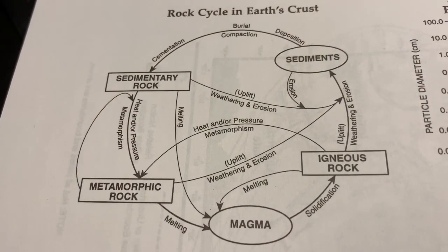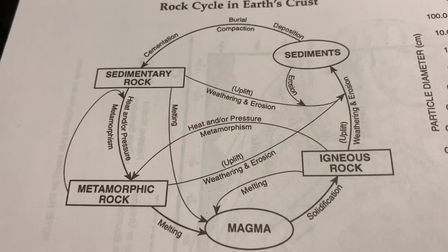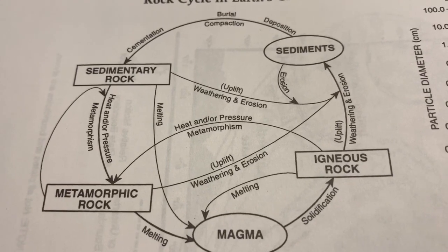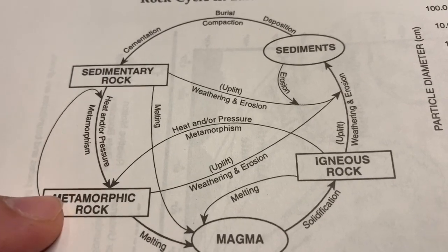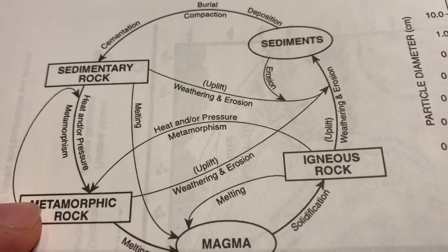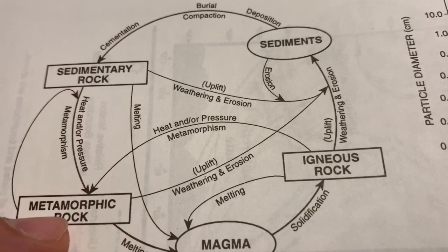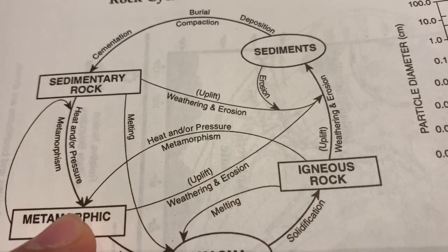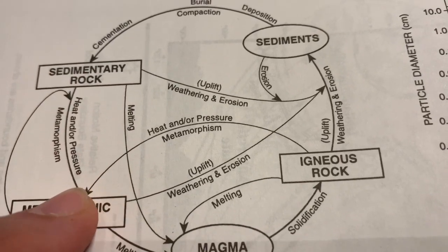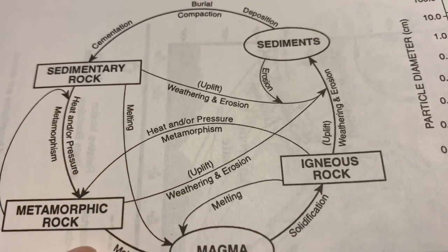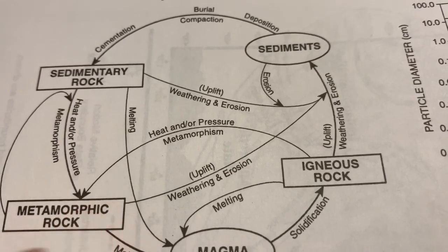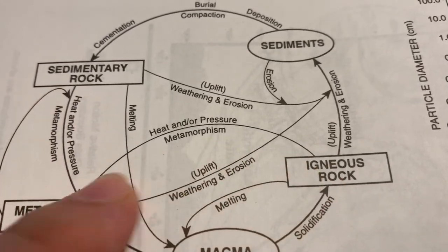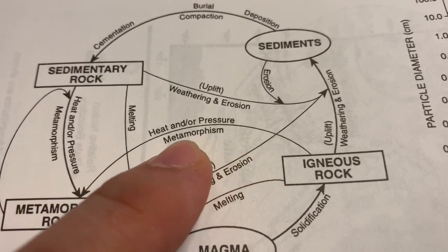If we're going to talk about metamorphic rocks, we have to talk about where they are on the rock cycle chart. We're looking at the chart in the upper left-hand corner of page six of your reference table. You can get to metamorphic rocks from anywhere — from a sedimentary rock, from an igneous rock, or you can even loop back. The process we use to get there is called metamorphism.